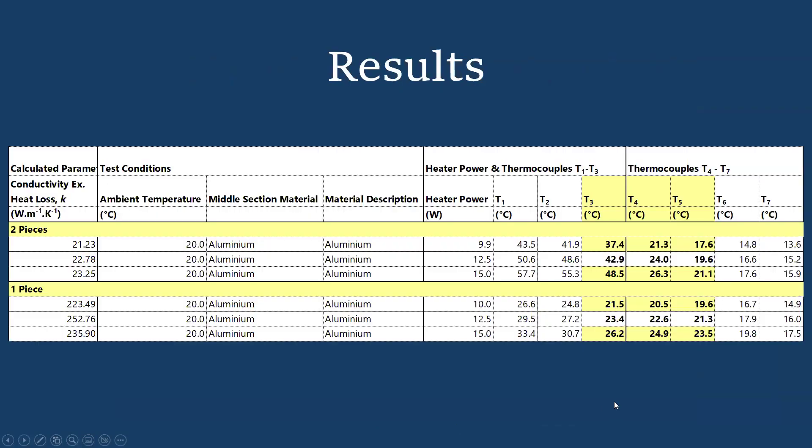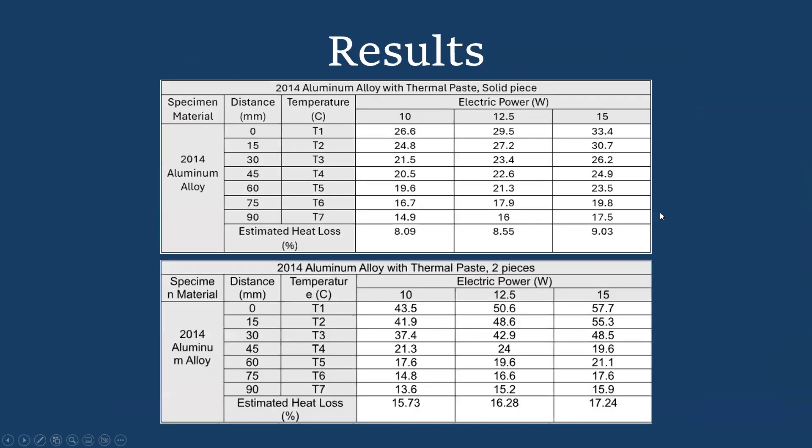Here are our results. This table shows the heater power and the temperatures at thermocouples T1 to T3. Here are the results for two pieces and for one piece, where we highlighted T3 to T5. Here are the results in a table for the estimated heat loss percentage, and this is for a solid piece of aluminum on top and two pieces on the bottom.